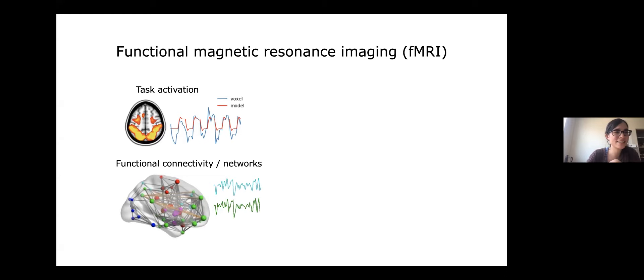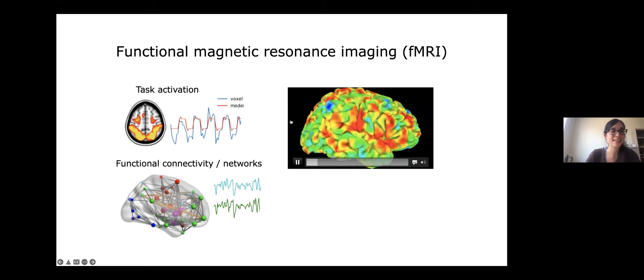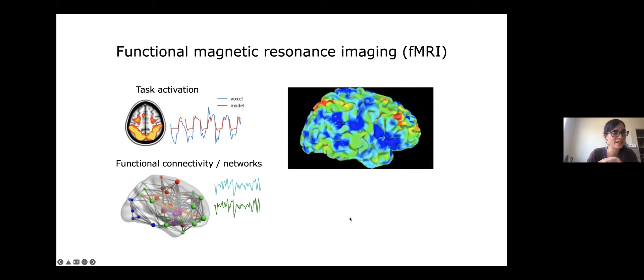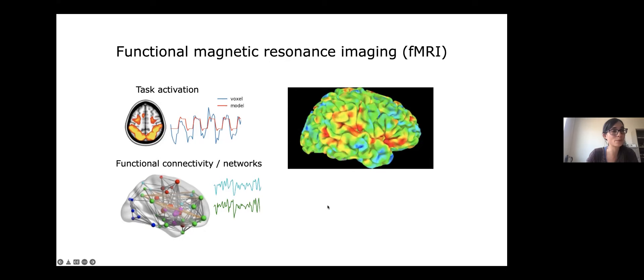Traditionally, fMRI research has focused largely on spatial localization — which brain areas are activated when people are thinking about certain things or presented with stimuli — or on connectivity, looking at which brain areas interact as networks based on correlations in their time series. These analyses typically use all data points across a scan to make a single inference of activity or connectivity. But fMRI gives us measurements from the whole brain over time, providing a rich spatial-temporal view of how signals change from moment to moment.